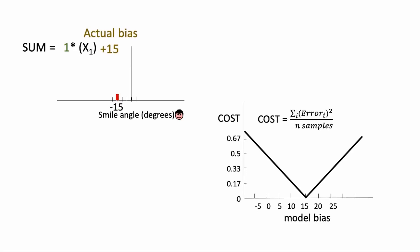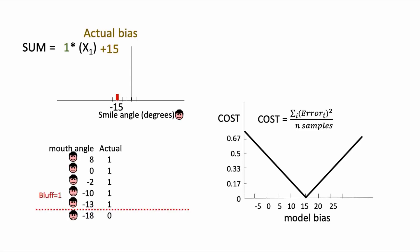On the right is shown a plot of the cost as a function of our model's bias. The horizontal axis shows different values for the bias term, and the vertical axis shows how the cost changes as we update the value of the bias. Remember, cost is the average squared error between our model's predicted labels and the actual data labels. We'll fix the weight value at 1 and just look at learning the value of the bias, and see how changing the bias changes the cost function for this small data set of 6 examples.